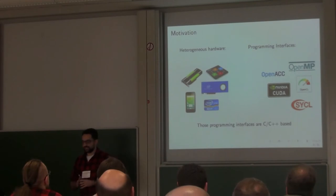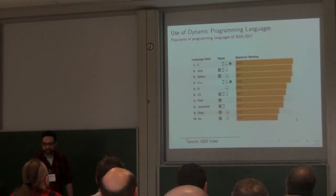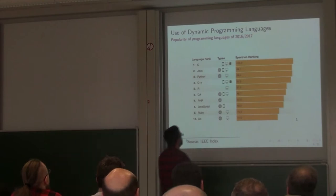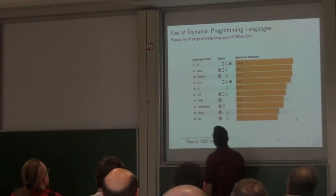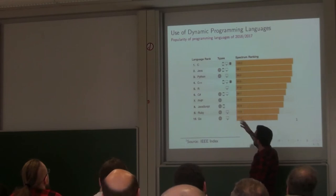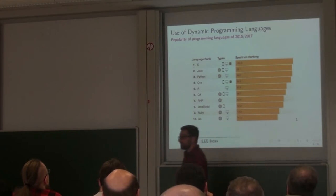However, as Jeremy Singer coined this graph, if you look at the ranking of the most famous languages now, C is one of the best — it's the first one — but we also have Python, R, PHP, JavaScript, Ruby, and probably much more.